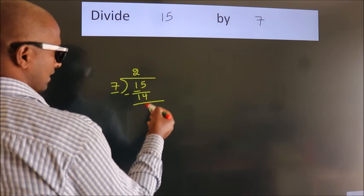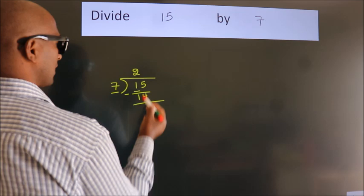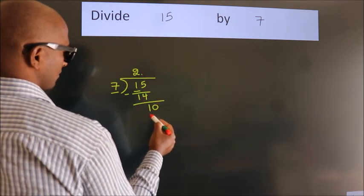After this, no more numbers to bring down, so what we do is we put a dot, take zero.